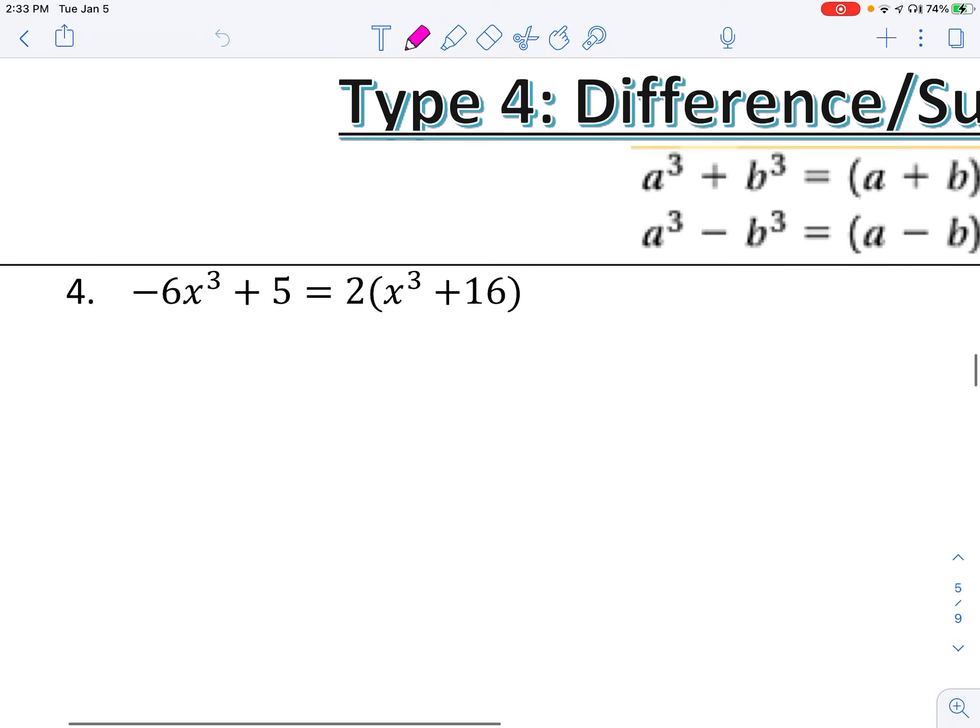Teach you guys how to factor perfect cubes. Before we do that, we need to set everything equal to zero just like we have been. So we're going to keep our negative 6x cubed plus 5, distribute 2x cubed plus 32. So it is important for us to go ahead and get things set equal to zero.